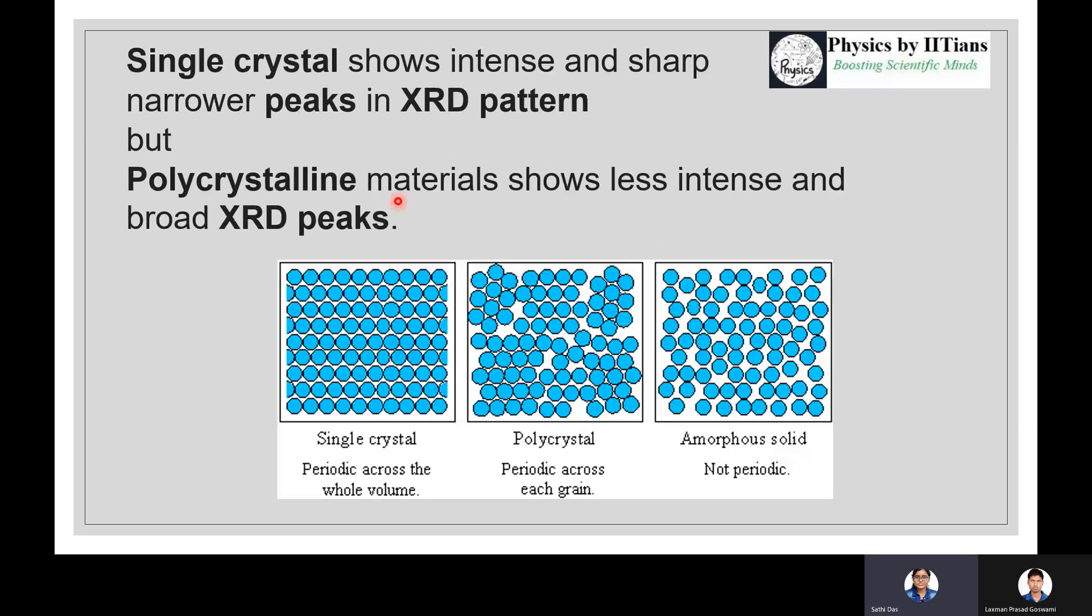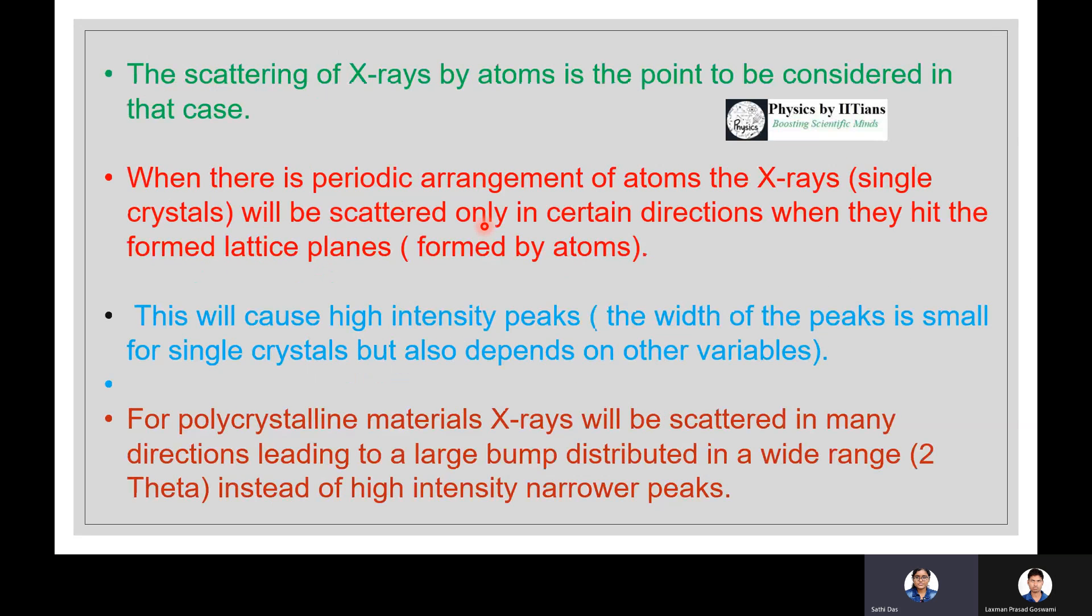How do we get the XRD pattern for a single crystal and for polycrystalline material? Ideally, the single crystal shows intense and sharp narrower peaks in the XRD pattern, but polycrystalline materials show less intense and broad XRD peaks.